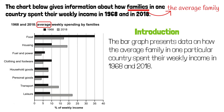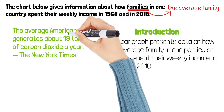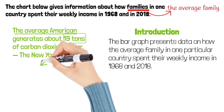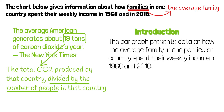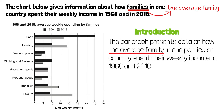The average family means that these numbers are per-family numbers. Here's another example: the average American generates about 19 tenths of carbon dioxide a year. This number is the total carbon dioxide produced by that country divided by the number of people in that country — it's a per-person number for the country. By using 'the average family,' we've demonstrated a strong ability to use accurate language to describe the figures in this chart. I also changed 'gives information about' to 'presents data on' and added the word 'particular.' The introductory paragraph is done.